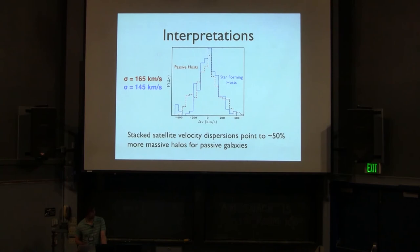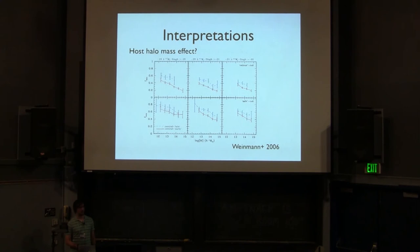So I'll quickly go through some possible interpretations. By stacking our satellite samples, we were able to see that by stacking the velocity offsets, we were able to see that the satellite samples are dynamically warmer around passive hosts than they are around star-forming hosts, suggesting that the passive hosts live in slightly larger dark matter halos. So one possible interpretation is that we're just seeing a dark matter halo effect. But then that has to be viewed in light of the galaxy conformity result of Weinman et al. 2006. Or even at fixed dark matter halo mass, star-forming hosts were more likely to have star-forming satellites than passive hosts. So there seems to be something going on beyond just dark matter halo mass.